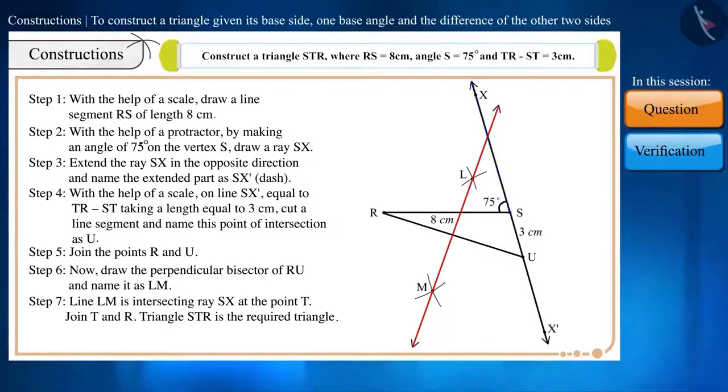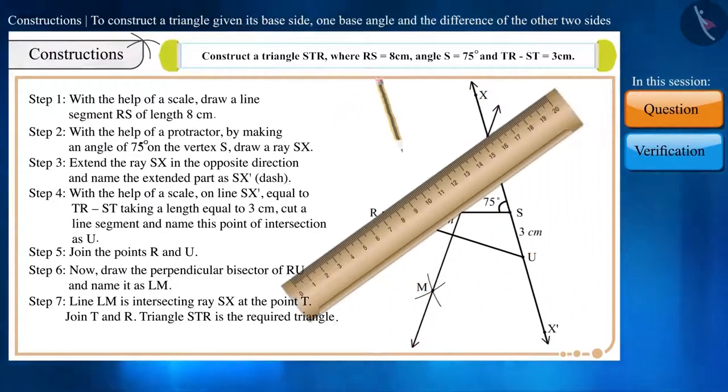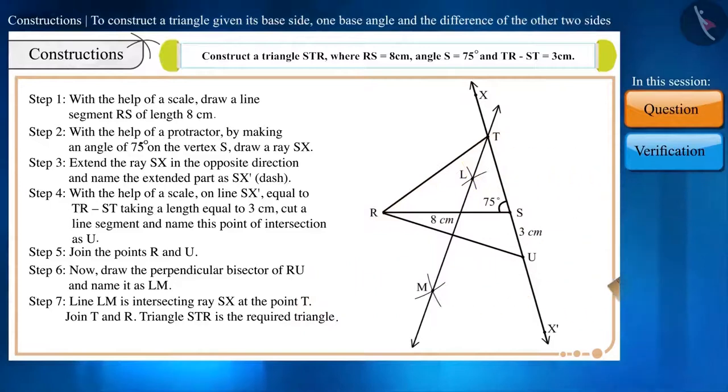Line LM is intersecting ray SX at point T. We will join T and R. And in this way, the required triangle STR will be formed.